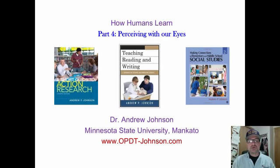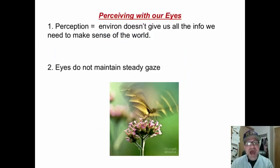We're talking about the information processing system, human learning, and perceiving with our eyes. Perception is magic. The environment doesn't give us all the information we need to make sense of the world.